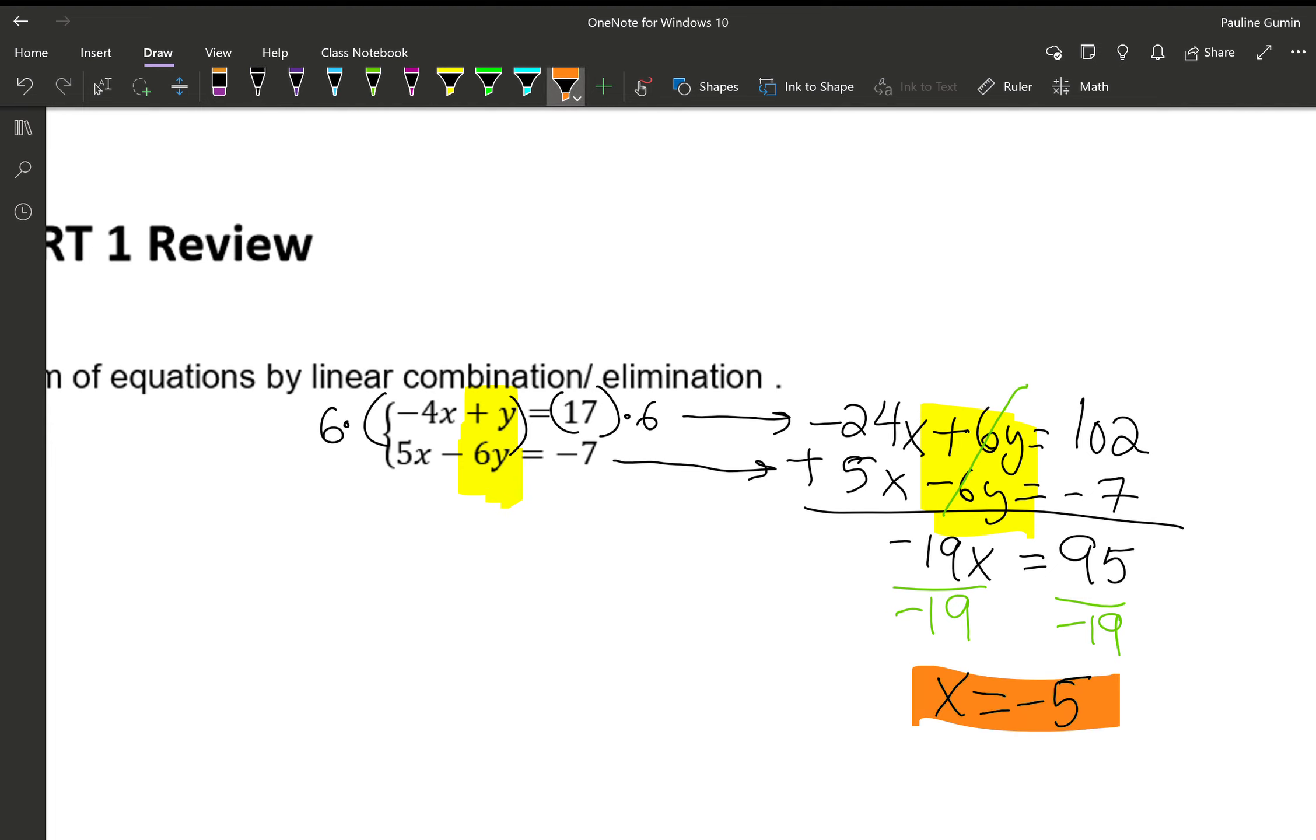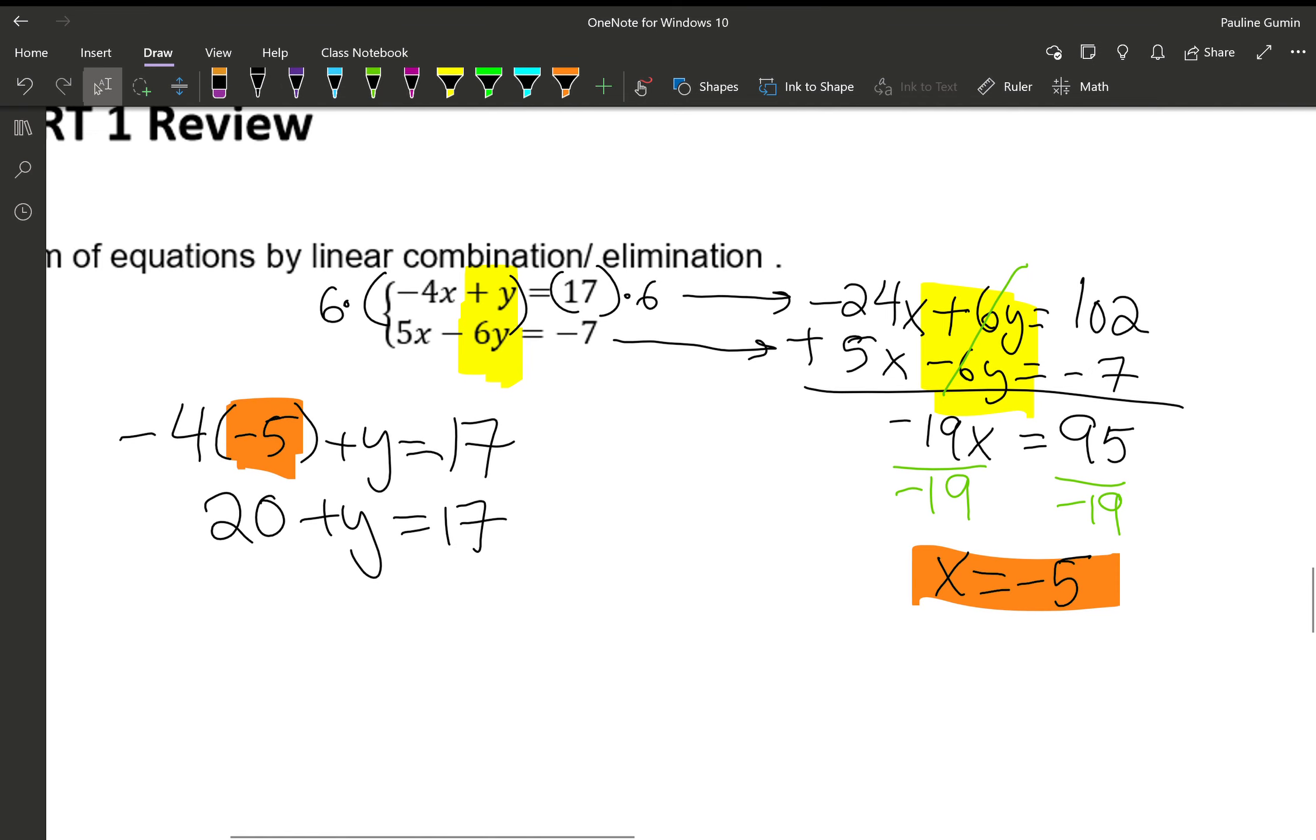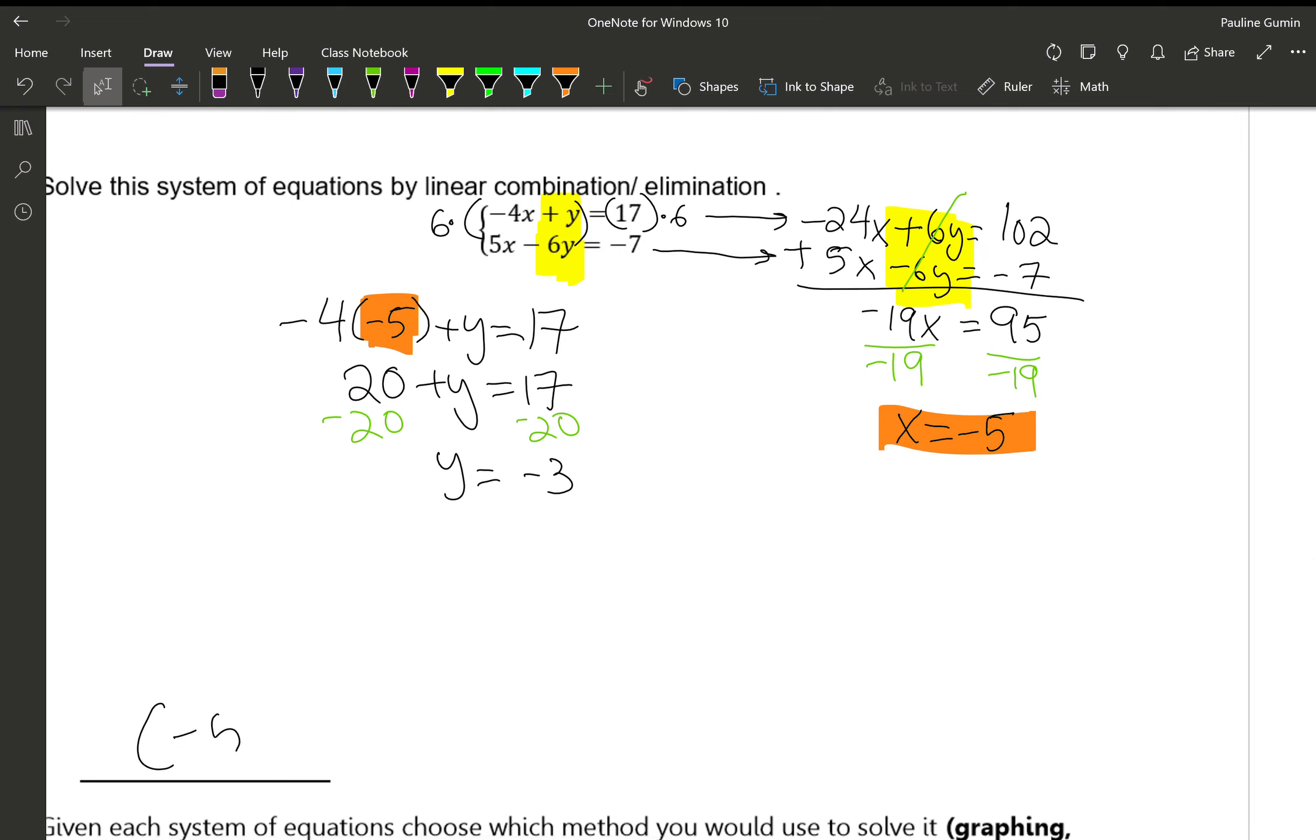Like I said in the previous problem, it doesn't matter which one we plug it into. I feel like plugging it into the top because Y is by itself. So instead of negative 4X, I'm going to have negative 4 times negative 5 plus Y equals 17. Again, you could have picked the bottom equation. You'll get the same answer. Negative 4 times negative 5 is 20. And then let's finish this up by subtracting 20 from both sides. Y equals negative 3. So our final answer. Negative 5, negative 3. X comma Y.